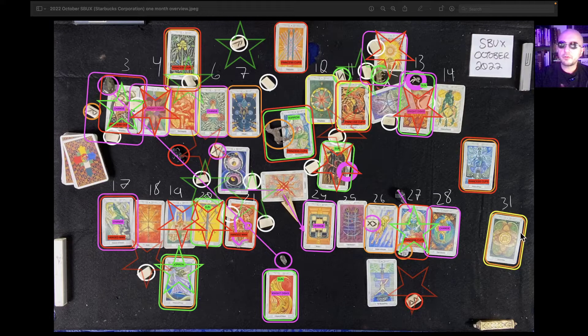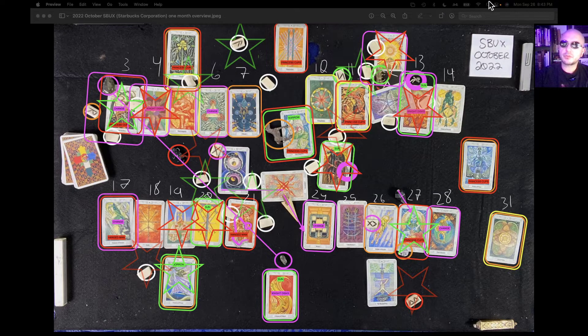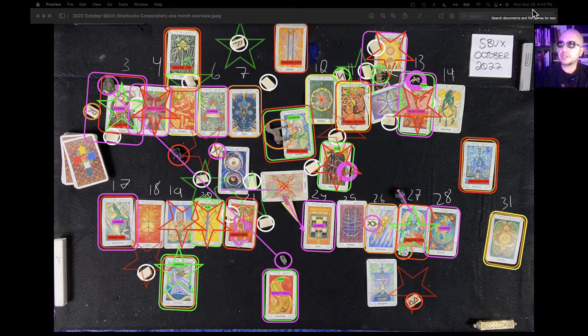This is the Starbucks one month overview reading for October 2022. It's currently September 26, 2022, 8:43 p.m. Eastern Time.